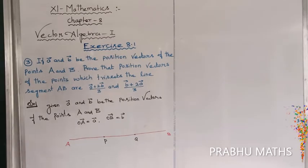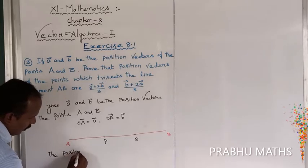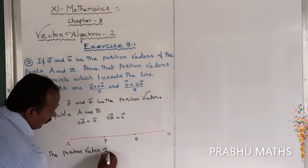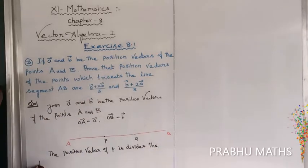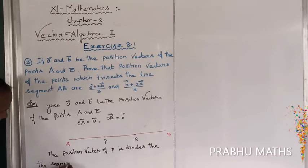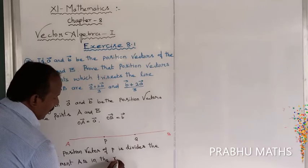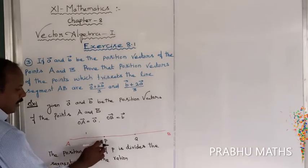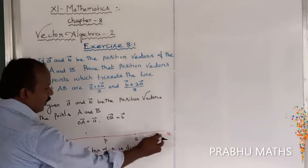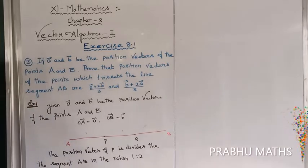The position vector of P — P divides the line segment AB. The ratio AP to PQ to QB is 1:1:1, so the ratio of P is 1 is to 2. That means P divides AB in the ratio 1:2.